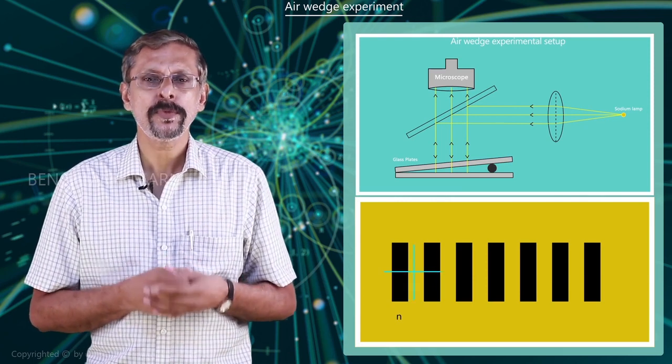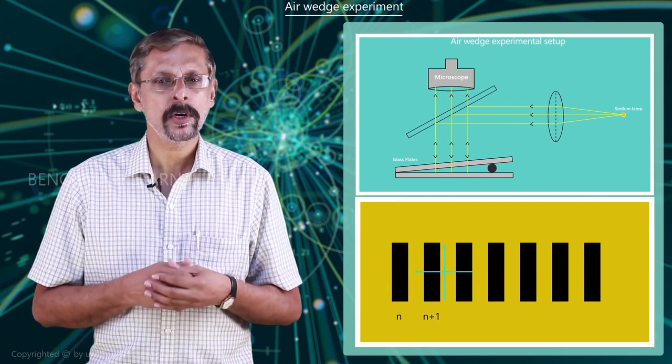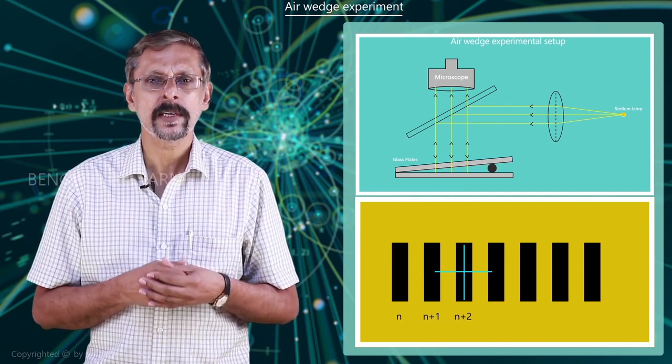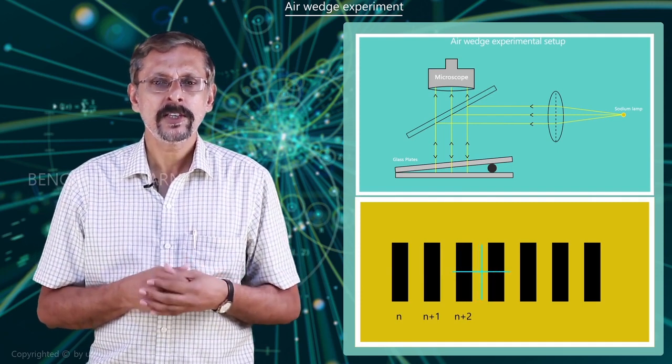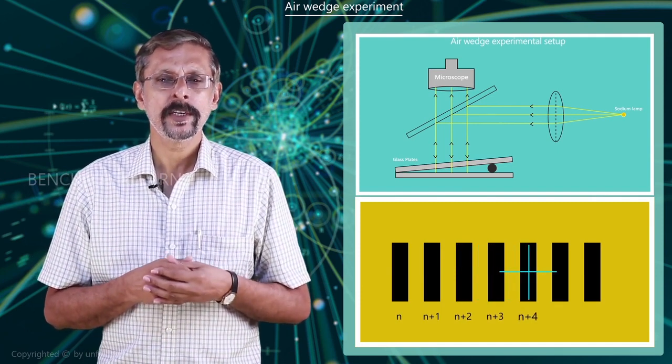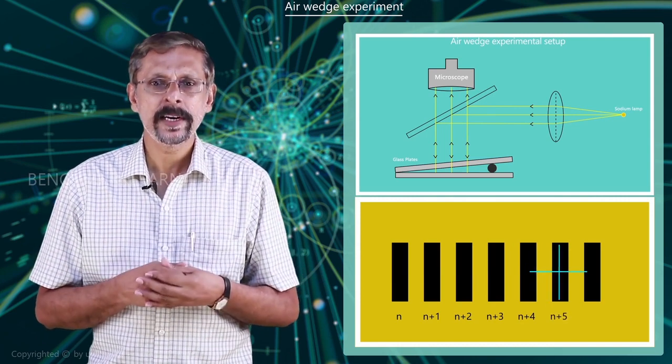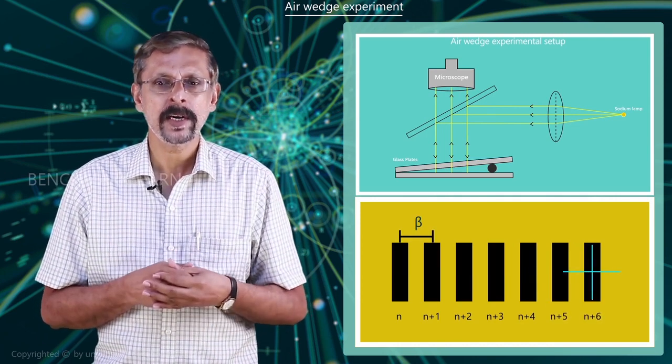Now the crosswire of the microscope is kept on alternate dark bands and the corresponding readings are taken. This is continued up to n plus 20. From the reading, the value of beta is calculated.